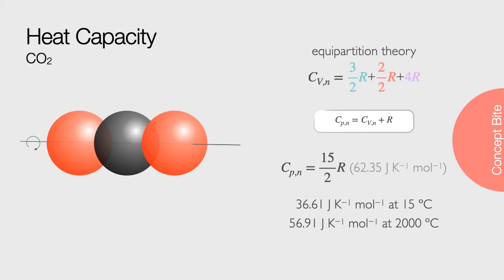However, at 15 degrees C, this is only 36.61 joules per Kelvin per mole. However, as the temperature increases, so does the heat capacity, and at 2,000 degrees C, it is approaching the theoretical value from equipartition theory.